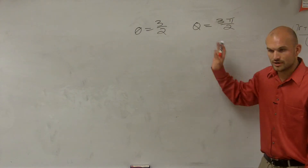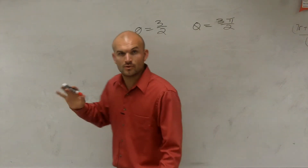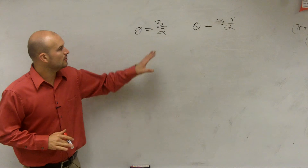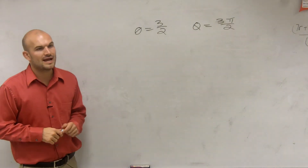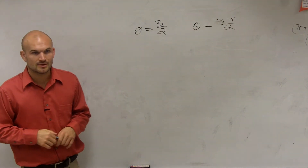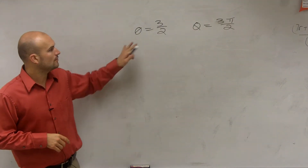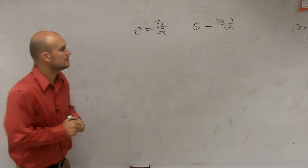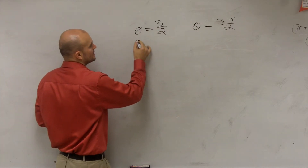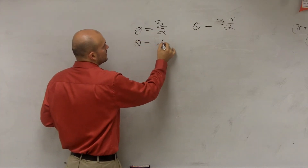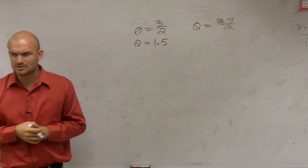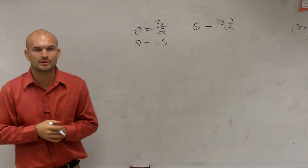So there are no degrees. I don't want you to be thinking one's in degrees, one's in radians. We have one that is 3 halves, and one that is 3 pi over 2. Usually, we're not going to write a radian as a fraction. We'd usually write it as like 1.5. And I'll just kind of explain what we're going to look at.